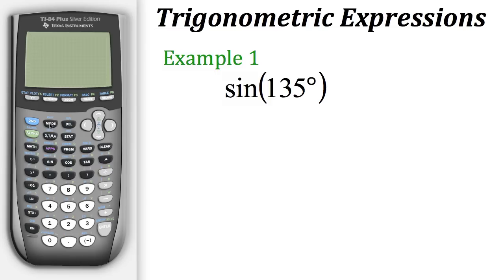If we go to the mode on our calculator, we can choose which measurement to use for angles. By default, the calculator is set to radians. To change that, we need to scroll down, go over to degrees, and hit enter. Now our calculator is in degree mode.